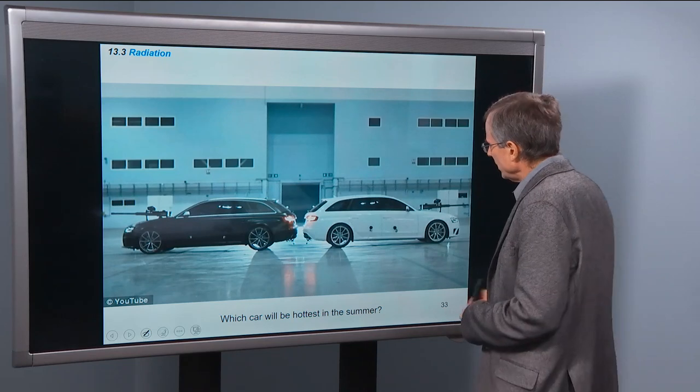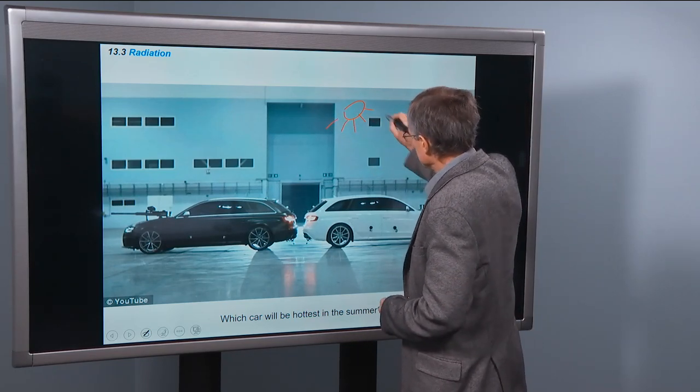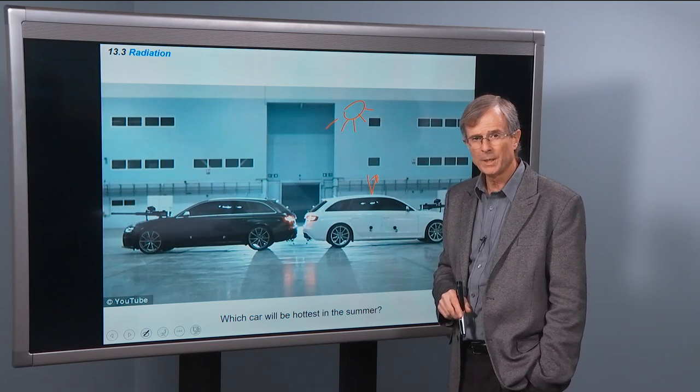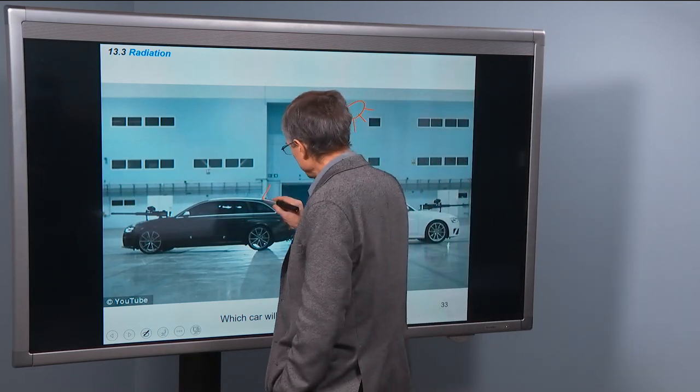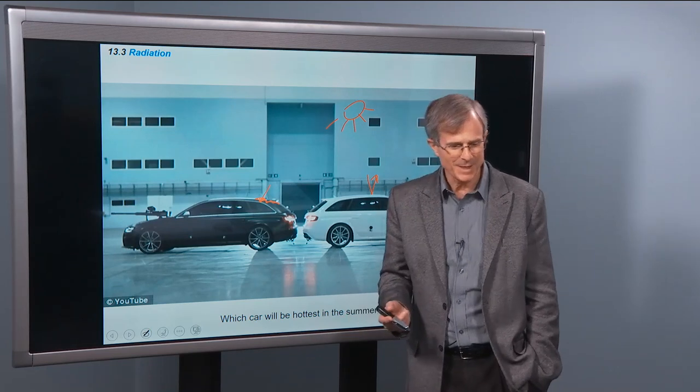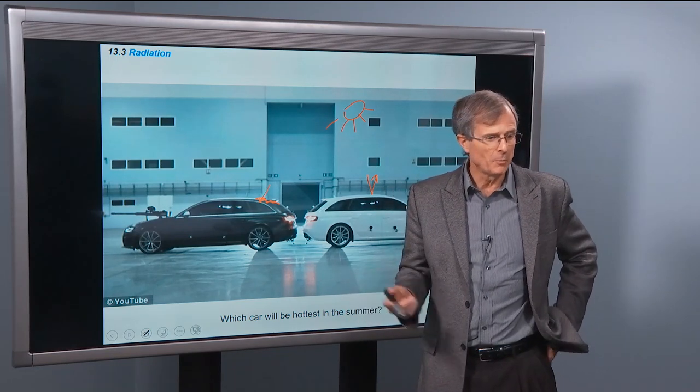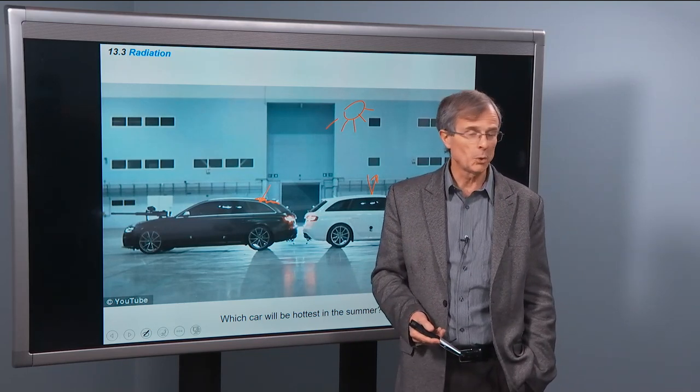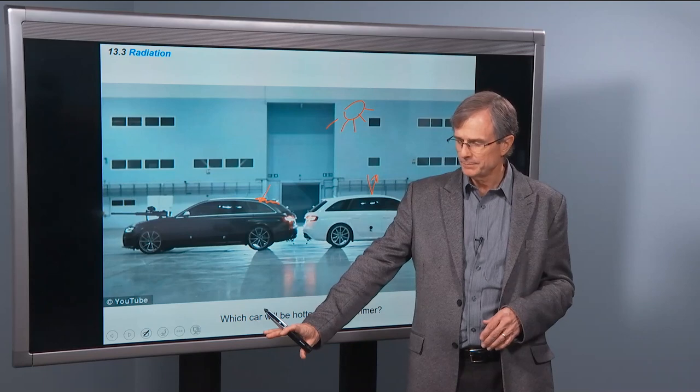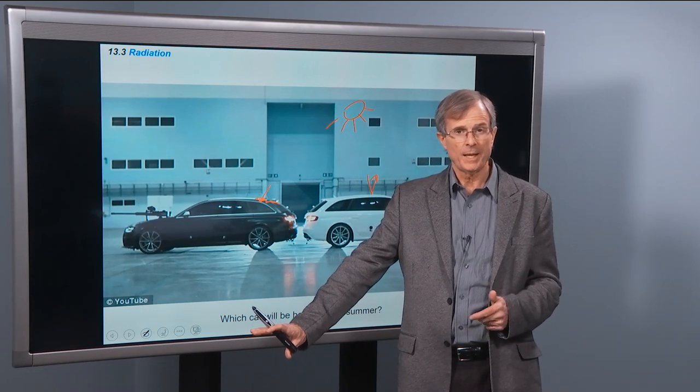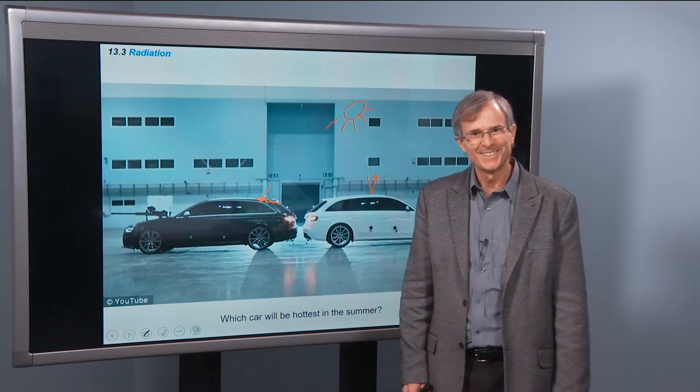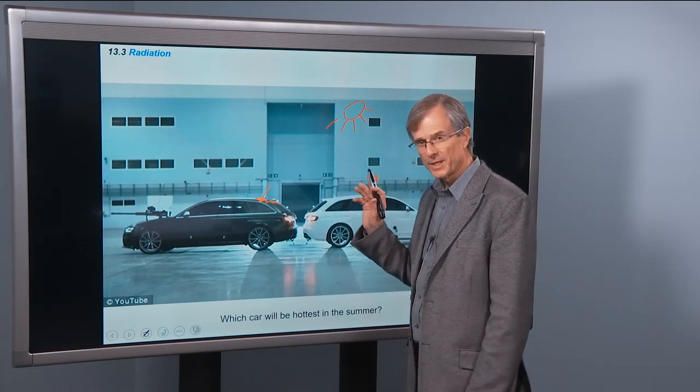So which car will be hottest in the summer? You've got the sun up above sending out its rays. They bounce off of this white car - they're not absorbed very well. Whereas they're absorbed by this black car and then re-radiated out into space. We were buying a car one time and the salesperson said, put your hand on this black car, it was a hot day. Now put your hand on this white car. Which one do you want to buy without air conditioning? The white car was a lot cooler because it doesn't absorb, it just reflects all of that radiation.